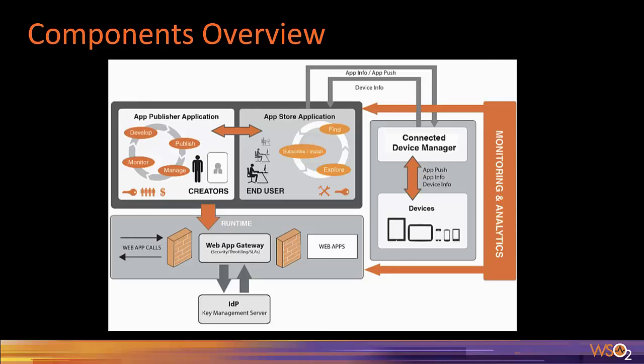AppGateway is dedicated to managing application invocations. Basically, it acts as a simple app proxy that intercepts app requests and applies policies such as throttling and security checks before passing the app call into the backend. Meanwhile, it gathers statistics on app usage and response time. The identity provider component is there to provision and manage single sign-on.